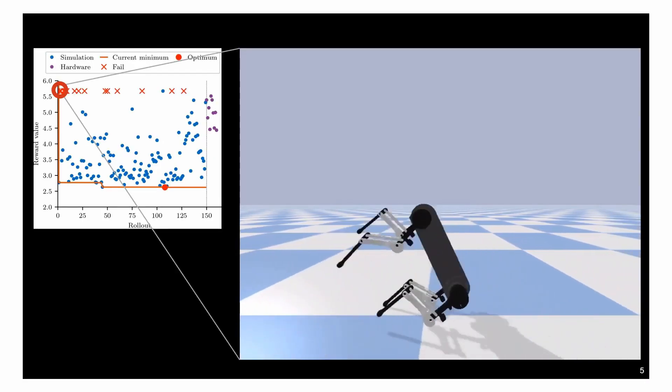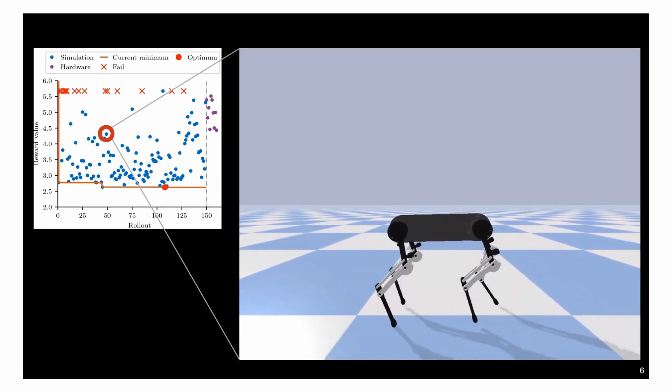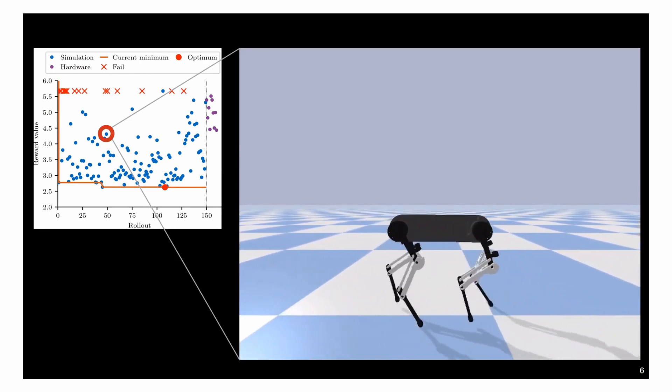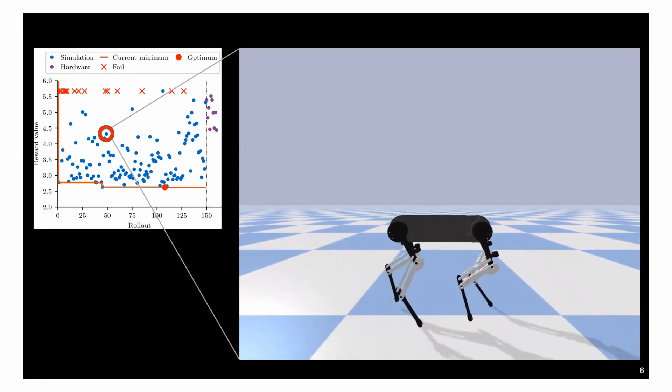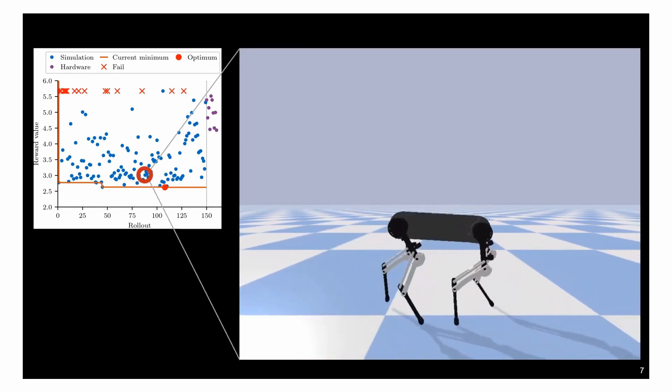Our central question is, if an animal stumbles, is that a mistake? Not if it happens once. But if it stumbles repeatedly, we can use this as a measure for how well the animal and consequently the robot walks.